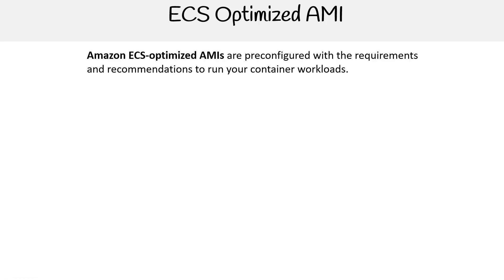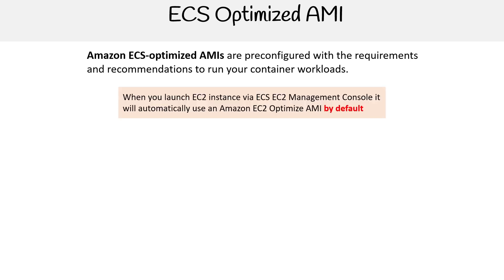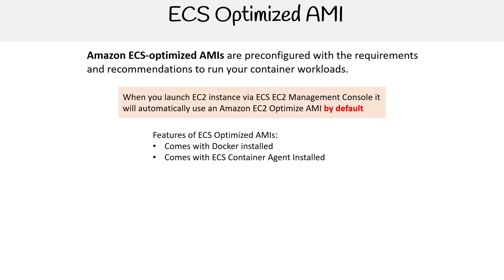Let us talk about the ECS optimized AMIs. These are pre-configured with the requirements and recommendations to run your container workloads. When you launch an EC2 instance via the ECS EC2 management console, it will automatically use the ECS optimized AMI by default. It comes with Docker pre-installed, the ECS container agent installed, and the OS level optimized for containers.